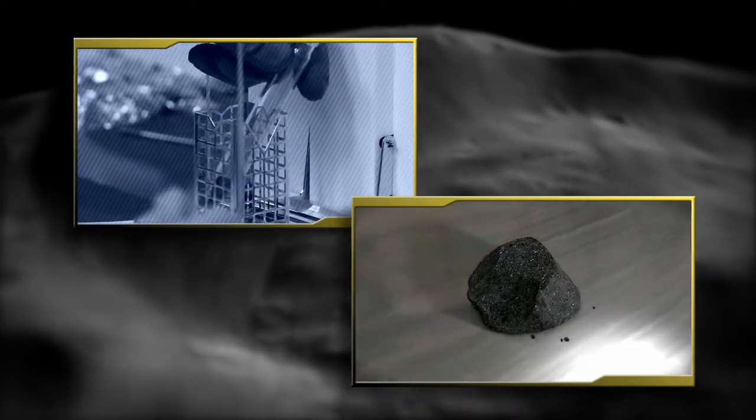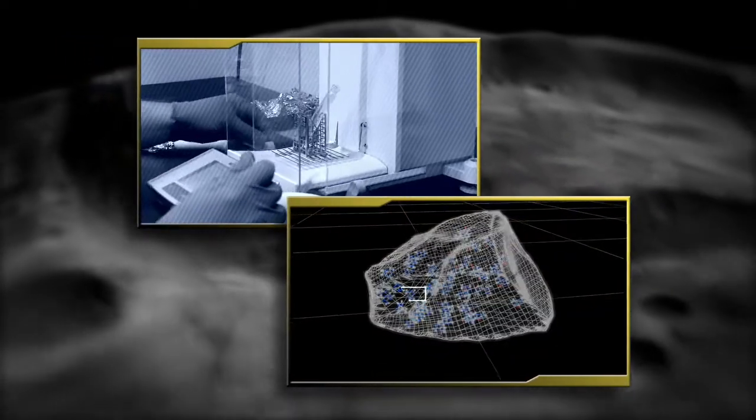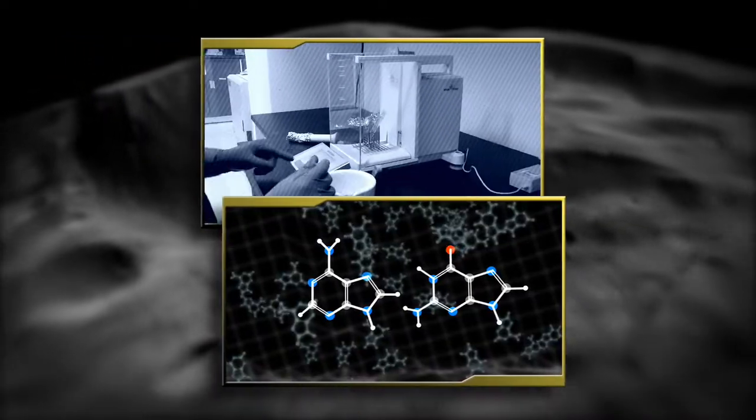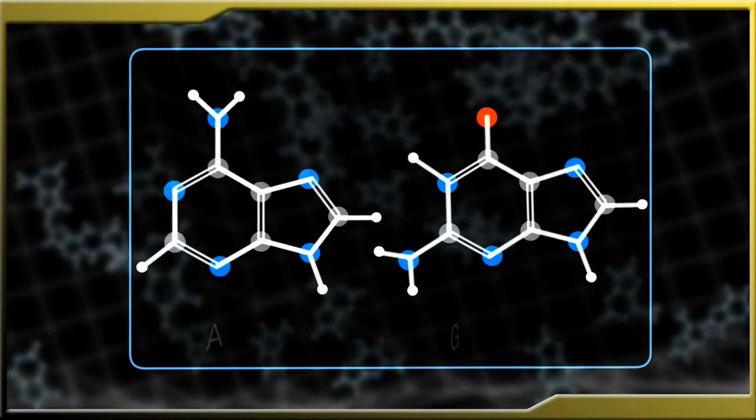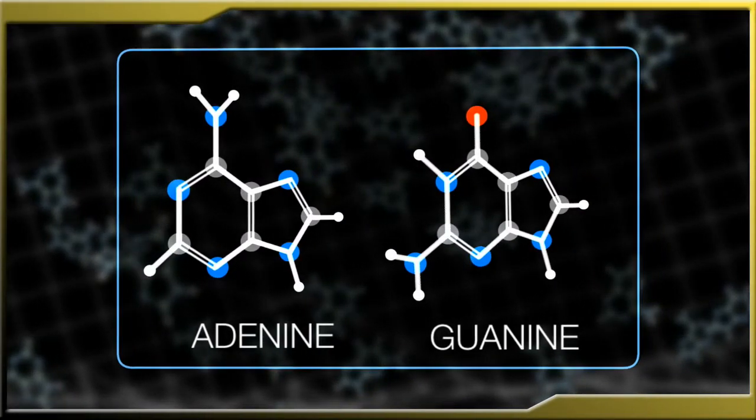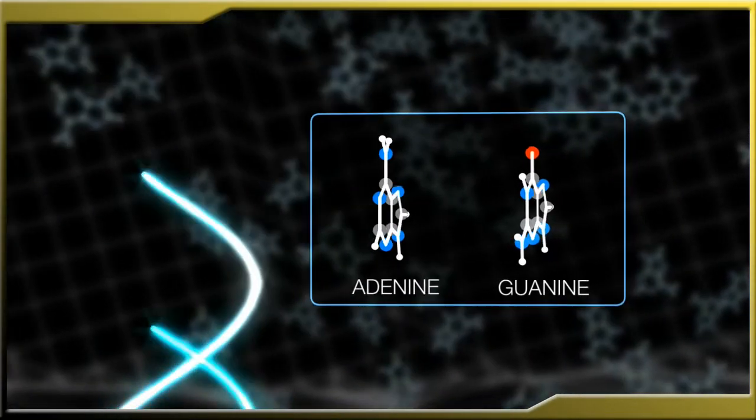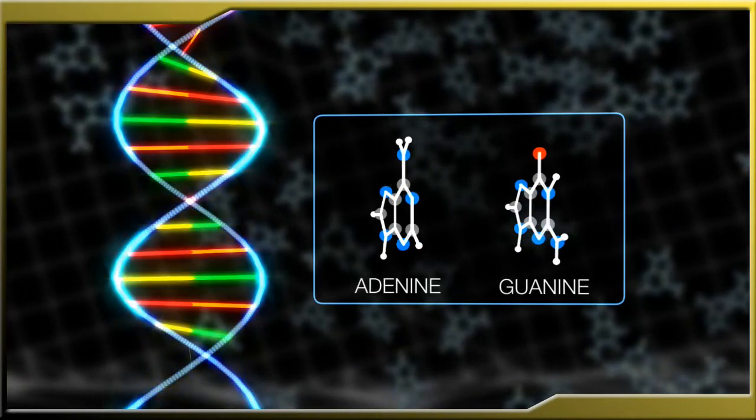Since Bennu may be rich in organic material or water left over from the formation of the solar system, sampling it could reveal whether the building blocks of life were present at that time, perhaps providing clues to the origins of life itself.